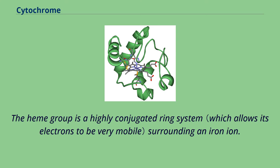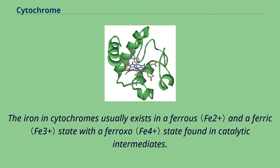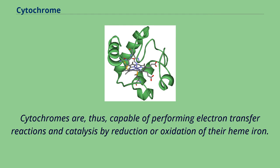The heme group is a highly conjugated ring system surrounding an iron ion. The iron in cytochromes usually exists in a ferrous and a ferric state, with a ferroxo state found in catalytic intermediates. Cytochromes are thus capable of performing electron transfer reactions and catalysis by reduction or oxidation of their heme iron.